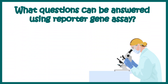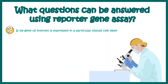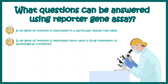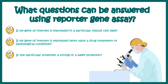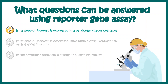Now let's talk about what questions can be answered using reporter gene assays. You can ask whether your gene of interest is expressed in a particular tissue or cell type. You can also ask whether your gene of interest is expressed more or less upon a drug treatment or a pathological situation. One can also ask whether a particular promoter is a strong promoter or a weak promoter. All these questions can be answered using a reporter assay.